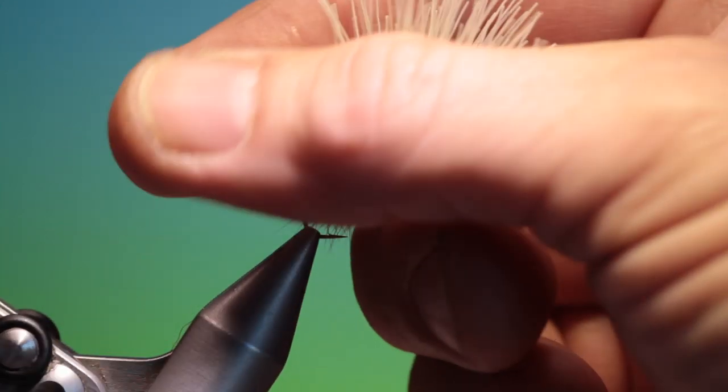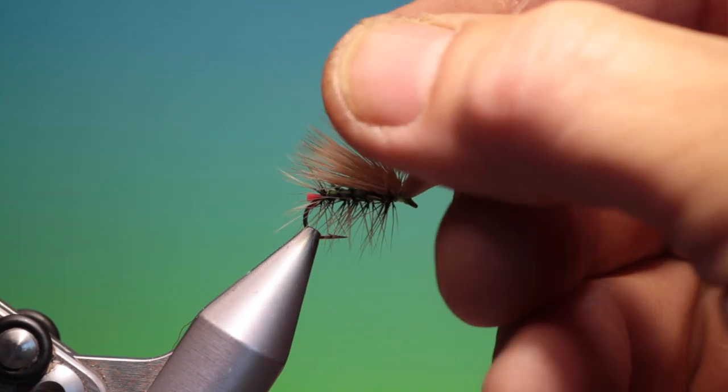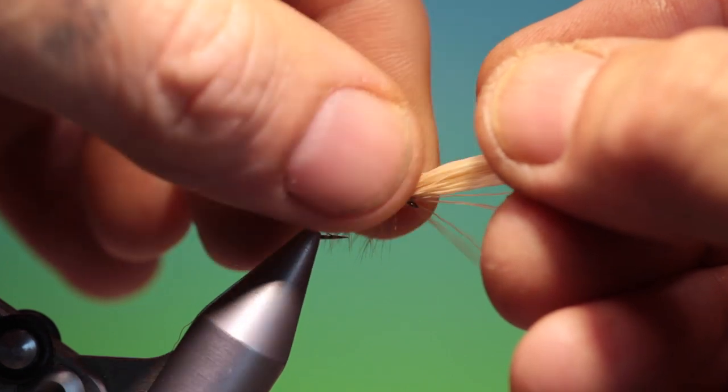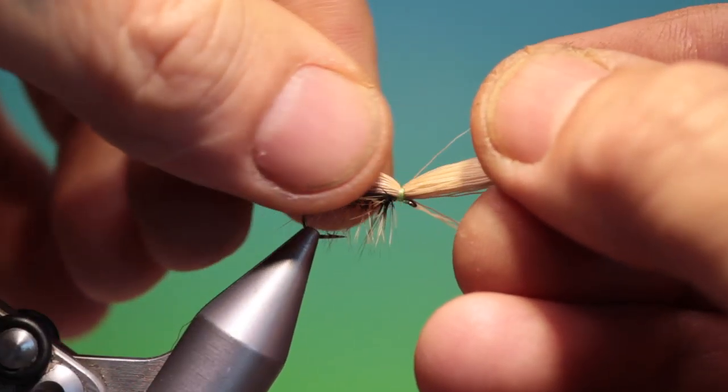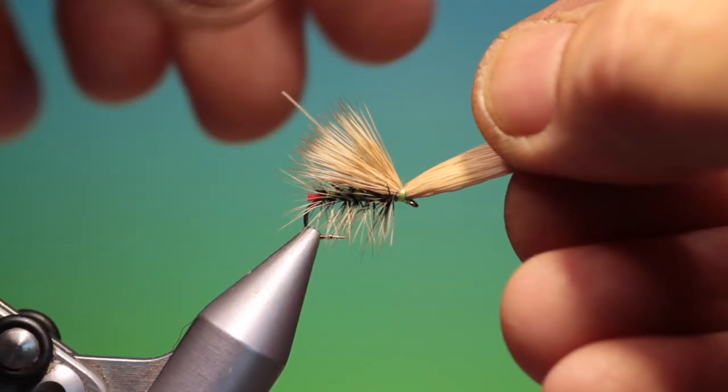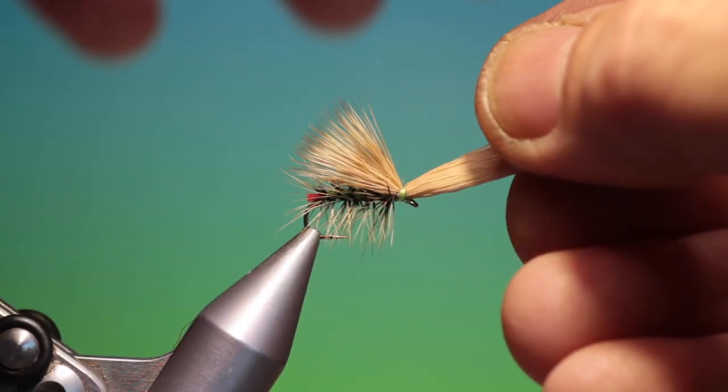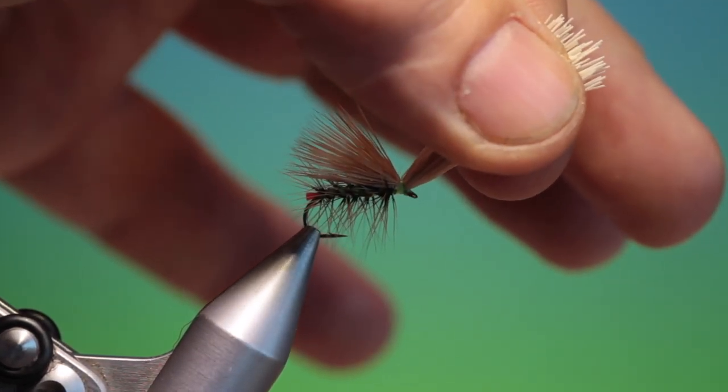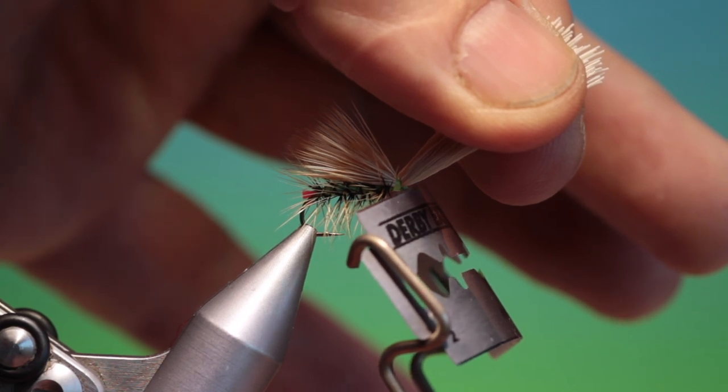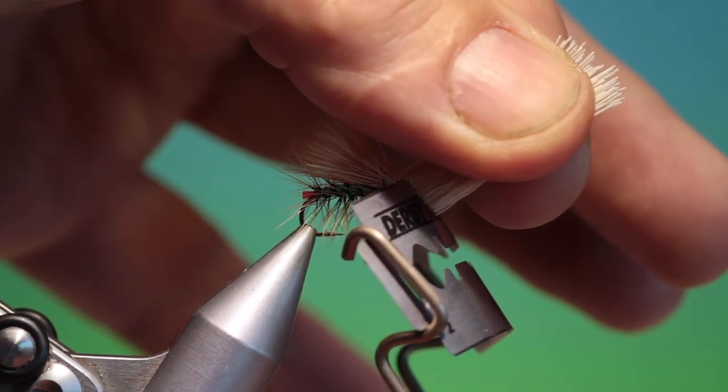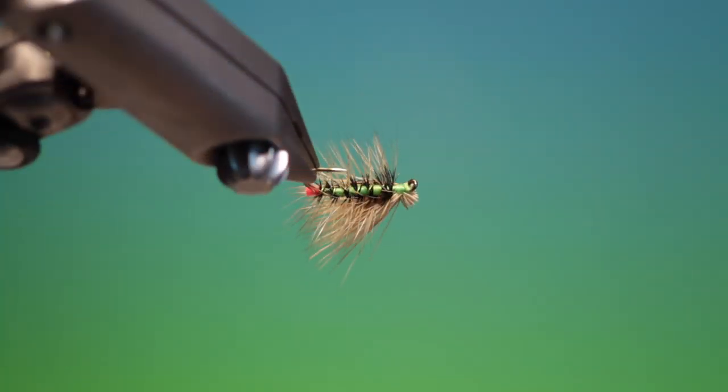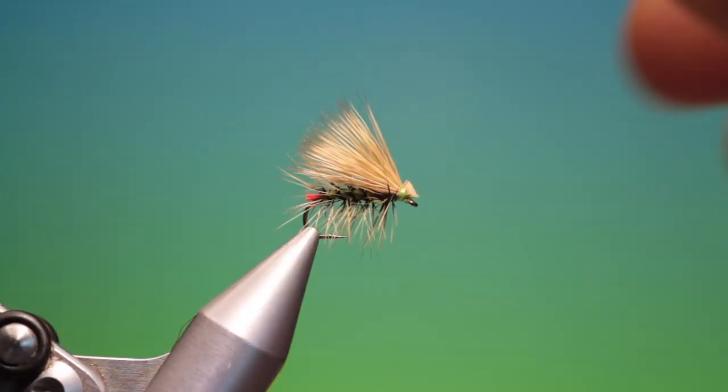Now the advantage of having long hair at the front is that you can pull it all forward without taking any of the wing with you. Or it makes it much easier to separate. Don't worry about that one. Just pull that all forward and I'll take my razor blade holder. And we'll make a nice neat cut at the front. And that's it. That's the hot butt caddis.